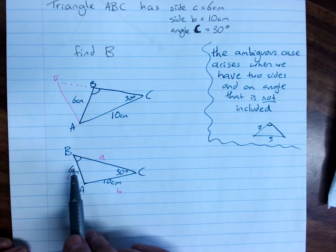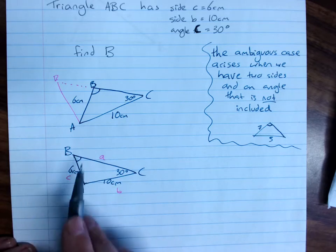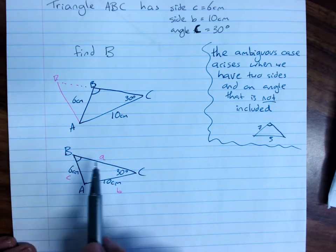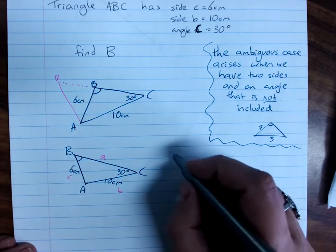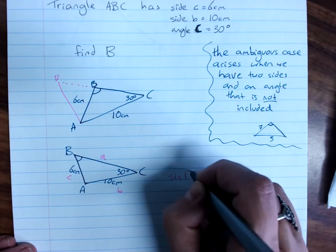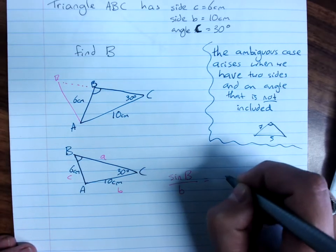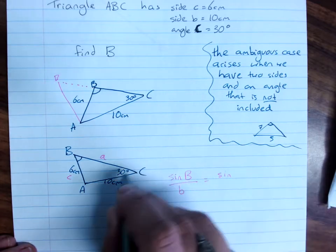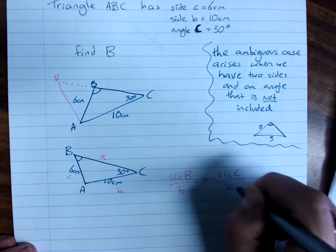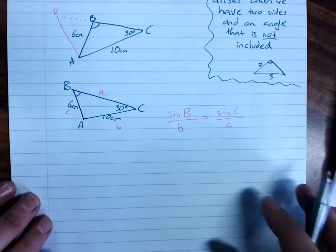Choose your ratio. I'm finding an angle, and I'm finding angle B. I have side and opposite angles, so I can use the sine rule. Sine B on b equals sine C on c. I'll switch to a color that you can read.